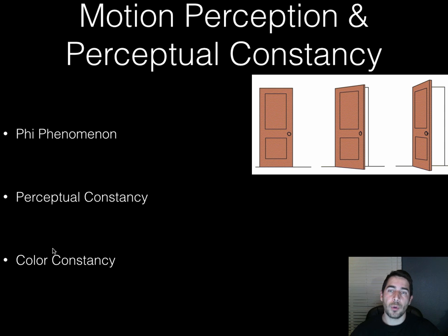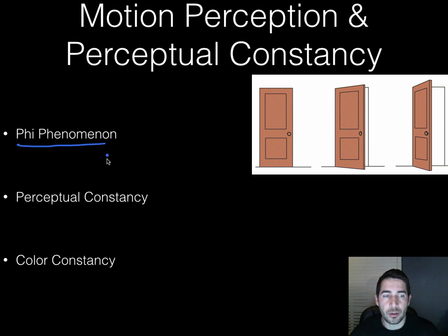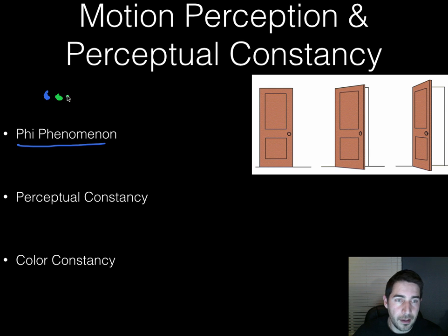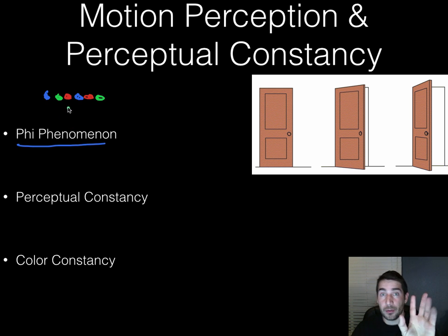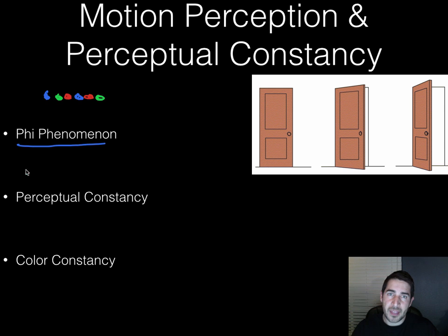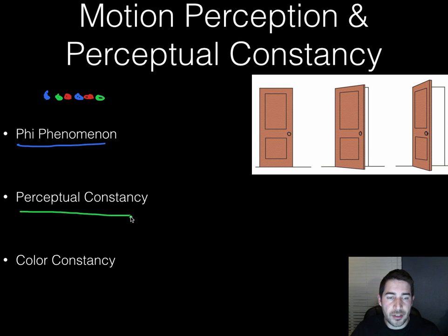Now let's look at motion perception and perceptual constancy. There's this cool idea called the phi phenomenon. Think of Christmas lights blinking in sequence — this one goes on, then this one, then this one — and it looks like they're moving. Or lights blinking back and forth: red, green, red, green — it looks like one light just shooting back and forth. That's the phi phenomenon: our brain interprets sequentially blinking lights as movement.